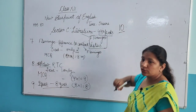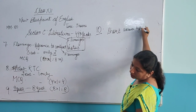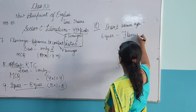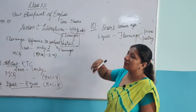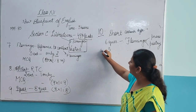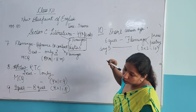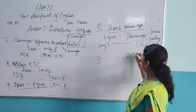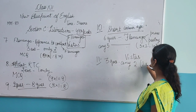Then comes the tenth question — short answer type. Six questions will be given from Flamingo, covering both prose and poetry. Out of those six, any five are to be done. It is 5 into 2 equals 10 marks. After that, short answer type questions from Vistas: three questions will be given and any two are to be done — 2 into 2 equals 4 marks.